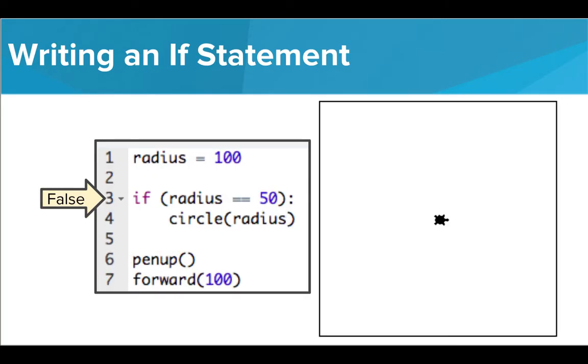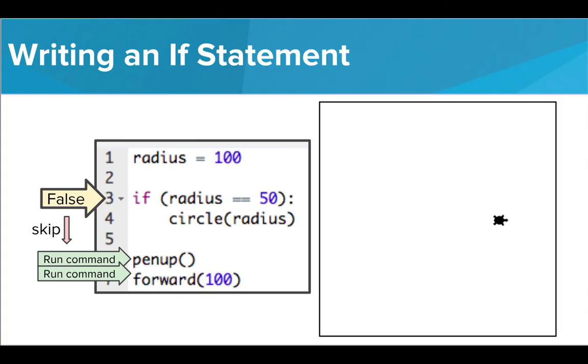We've now altered our code by changing the variable radius to have a value of 100. When Tracy checks the condition now, it is false because radius is not equal to 50. So Tracy skips the indented command and moves to complete the commands that follow the if statement, where she lifts the pen up and moves forward 100 pixels.